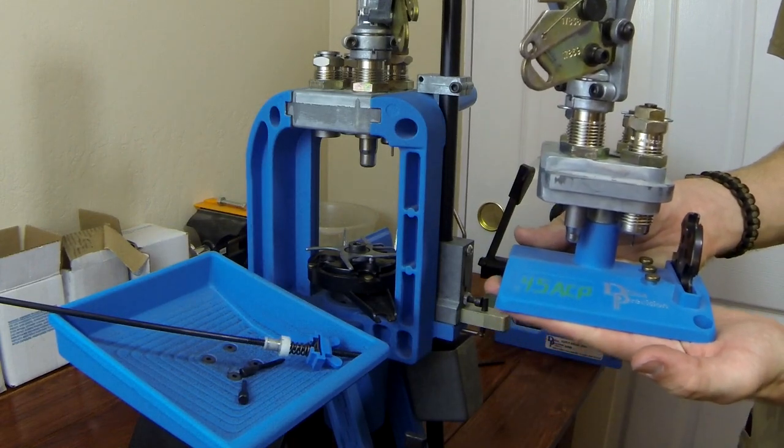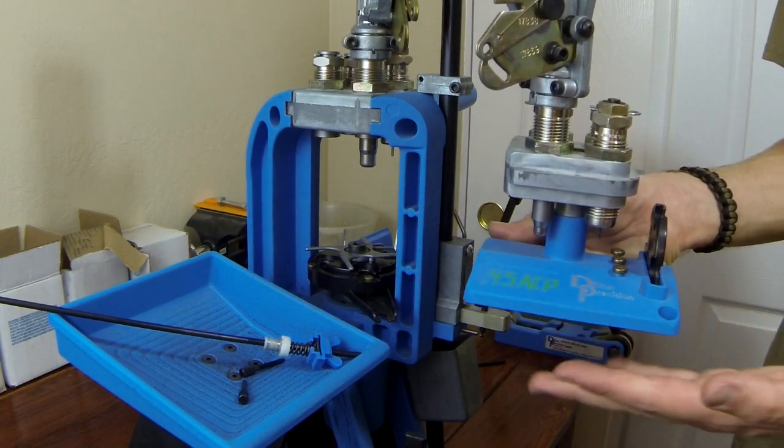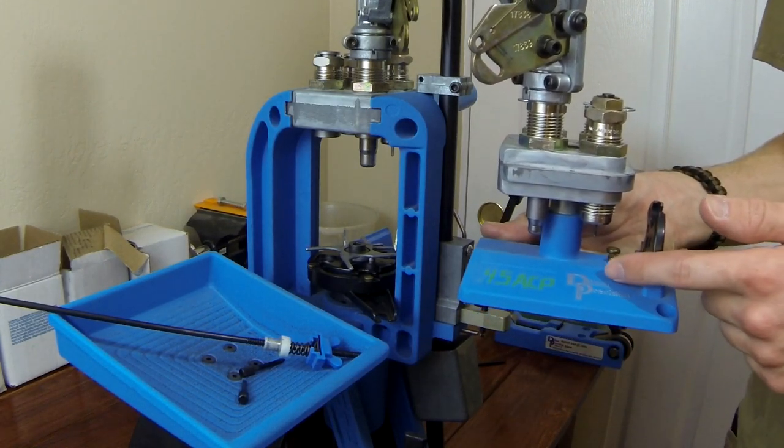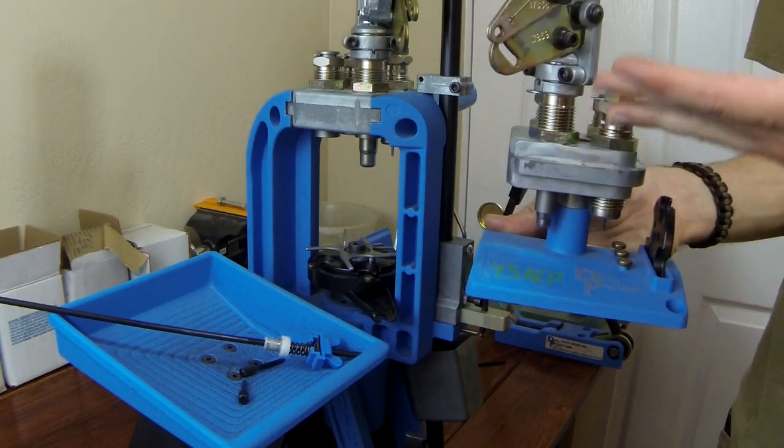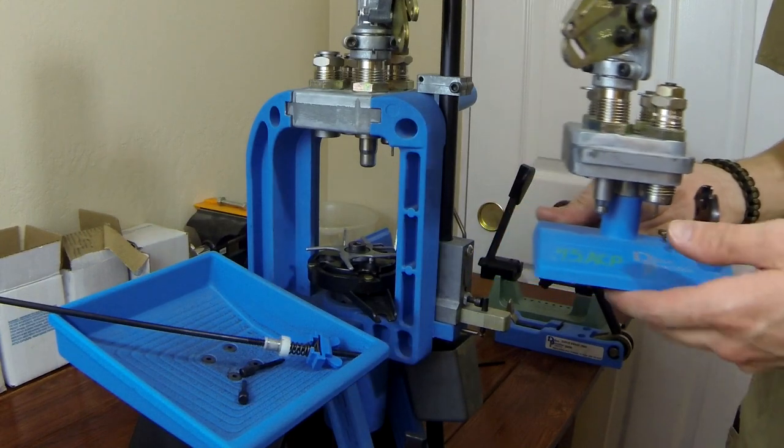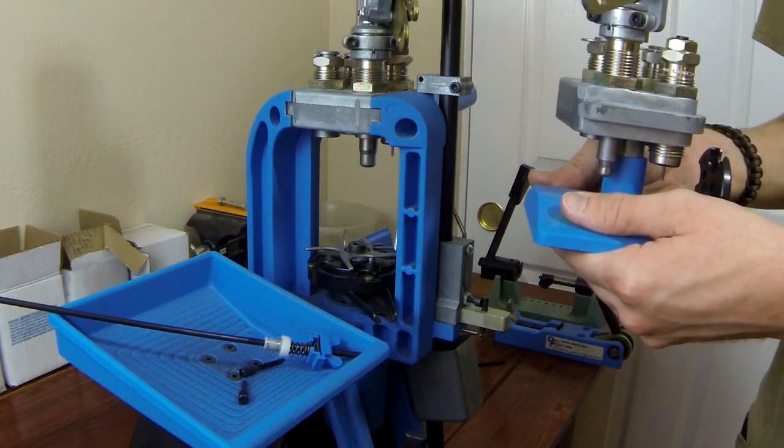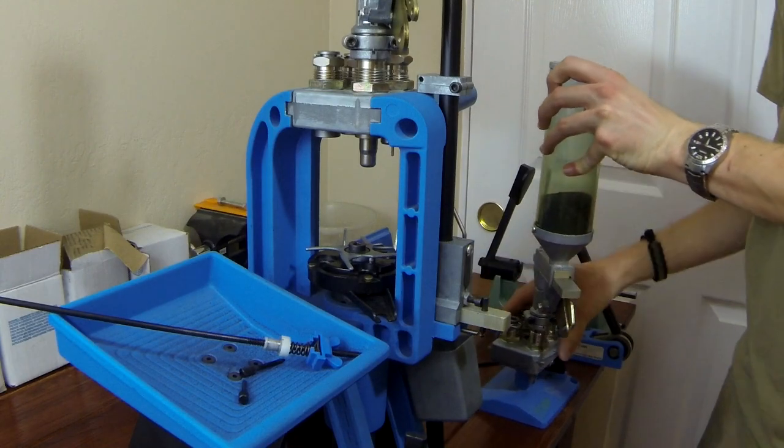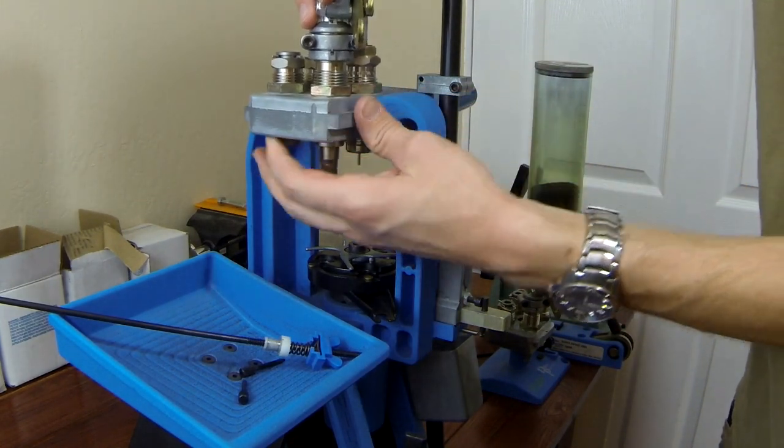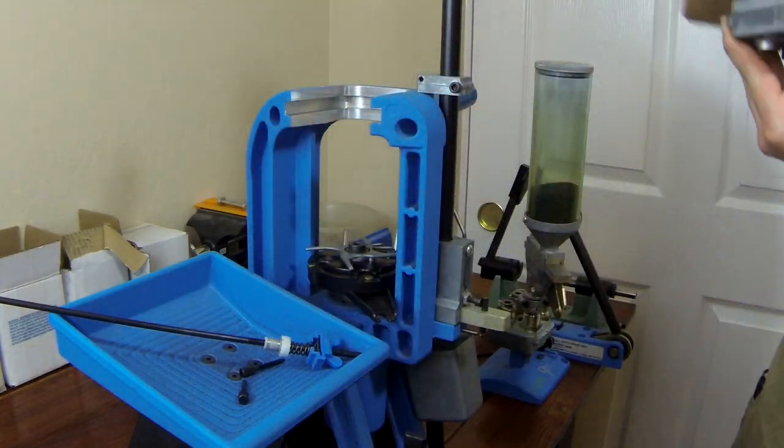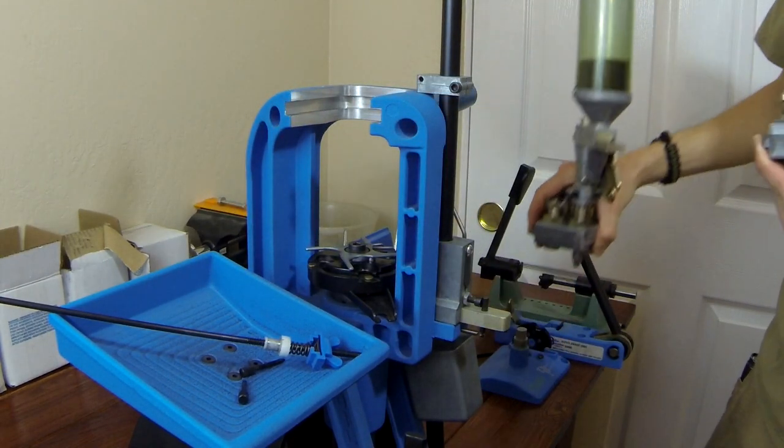Alright, so this is what a complete assembly will look like. It's got its own stand, its own locator buttons, shell plate, and tool head, and then obviously you put your dies in it to match whatever you want. This one happens to be mislabeled. So we're going to go ahead and remove this one that is set up for 45. Pull him out like so. Swap it out.